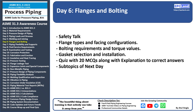Day six: flanges and bolting. This is the sixth topic in the ASME B31.3 awareness course. Previously we have covered introduction, material requirements, pressure design, piping loads, and welding and joints. In this topic we are going to cover three subtopics: flange types and facing, bolting requirements and torque values, and gasket selection and installation.